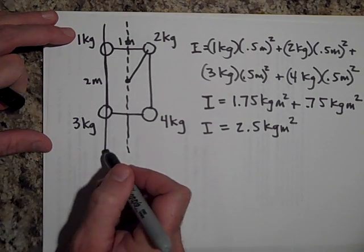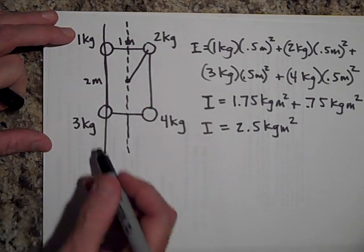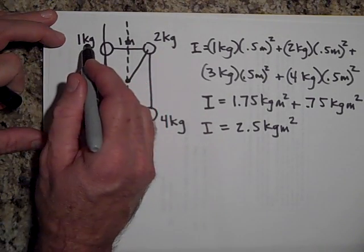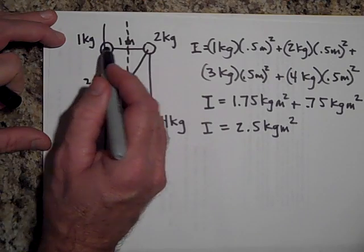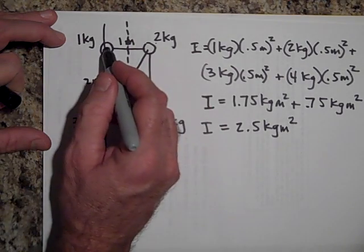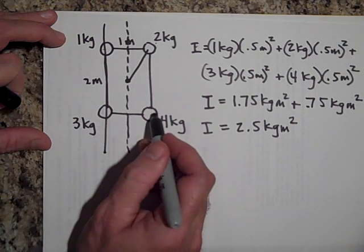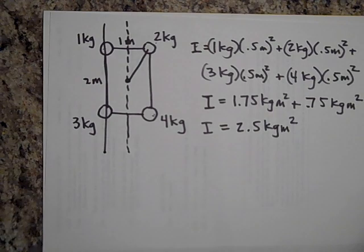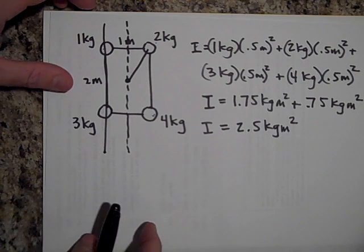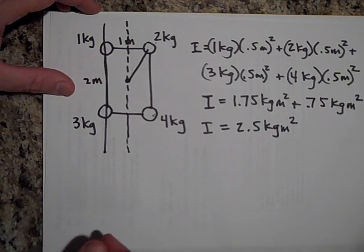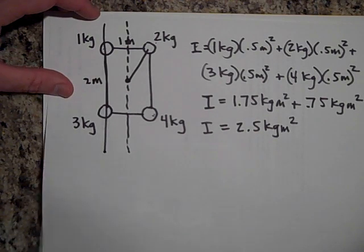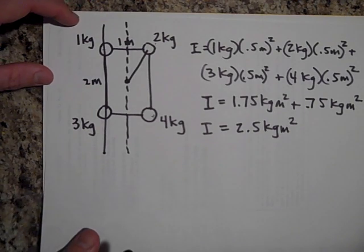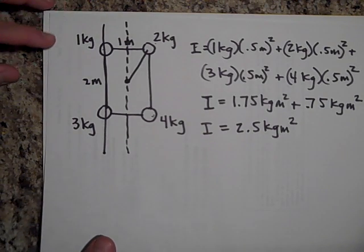In which case, if we found the I for this axis, it'd be one kilogram times zero, plus two kilograms times one meter squared, plus four kilograms times one meter squared, plus three kilograms times zero again. So man, rotational inertia or rotational sluggishness, that's a little bit more complicated than just regular inertia. M is the mass, is the regular inertia.